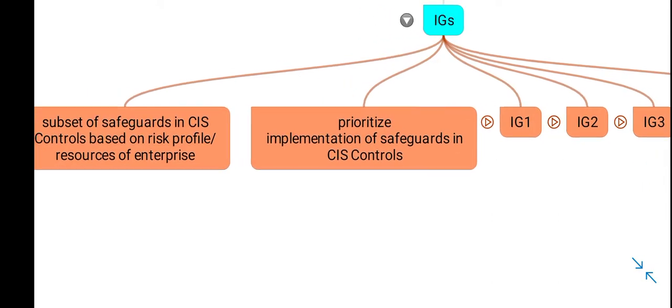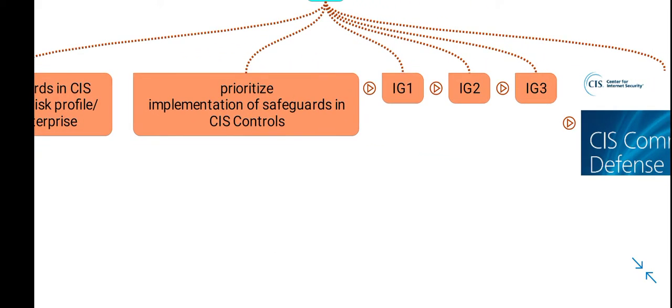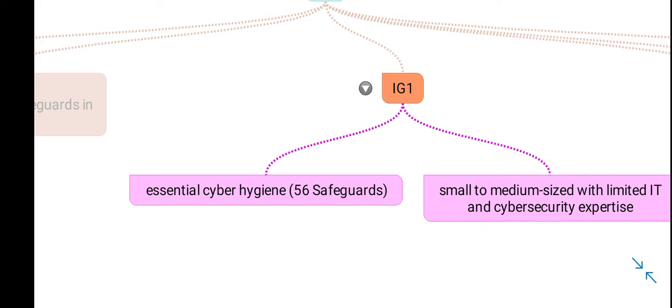Coming over to the implementation groups: there are three implementation groups, and safeguards have two types of distribution. The 153 safeguards are assigned to different main CIS control categories — there are 18 of these main CIS control categories — and also each safeguard is classified into an implementation group. A safeguard can be classified into all three implementation groups if it is critical to implement. Implementation group 1 is for smaller organizations and is called essential cyber hygiene, and there are 56 safeguards classified as implementation group 1.